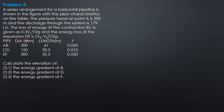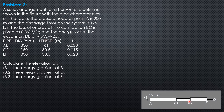The energy loss at the expansion DE is given by the quantity (velocity at D minus velocity at E) squared over 2g. For sudden expansion, the formula is (velocity at the smaller pipe minus velocity at the bigger pipe) quantity squared over 2g. This formula for sudden expansion was explained in the lecture video on series parallel pipes and minor losses.